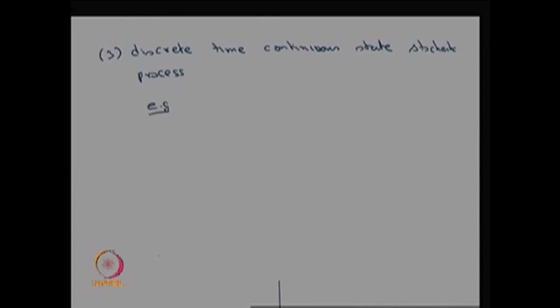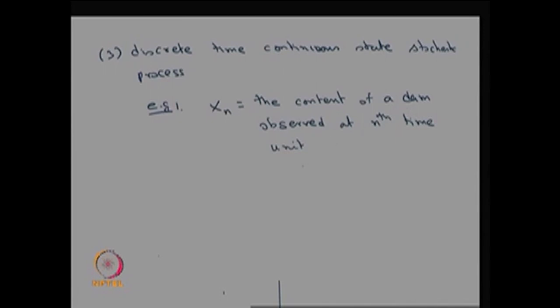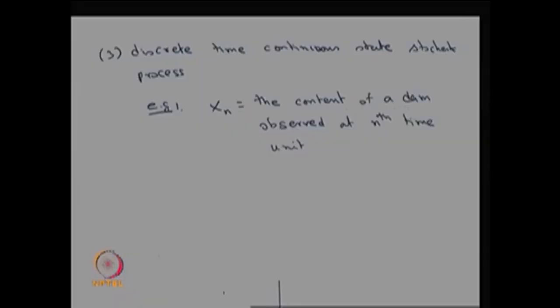So let us create an example for that. X subscript n denotes the content of a dam or water reservoir observed at the nth time unit. The time unit could be every one hour, every day at a fixed time, or weekly once. So at the end of each nth time unit you are observing what is the content of the dam.